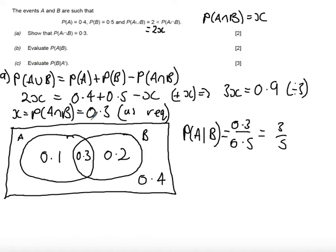Finally, it says evaluate probability of B given not A, the probability of B given that it's not A. So if we look at the diagram, not A is these two probabilities here, so the probability is no longer 1, it's out of 0.6.